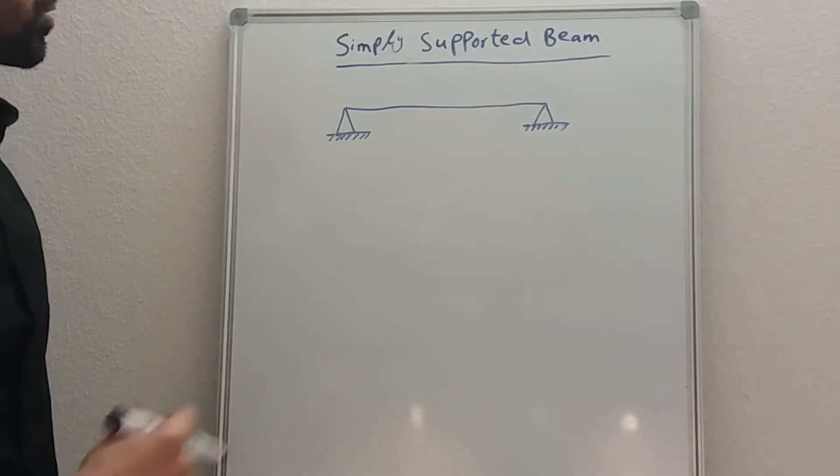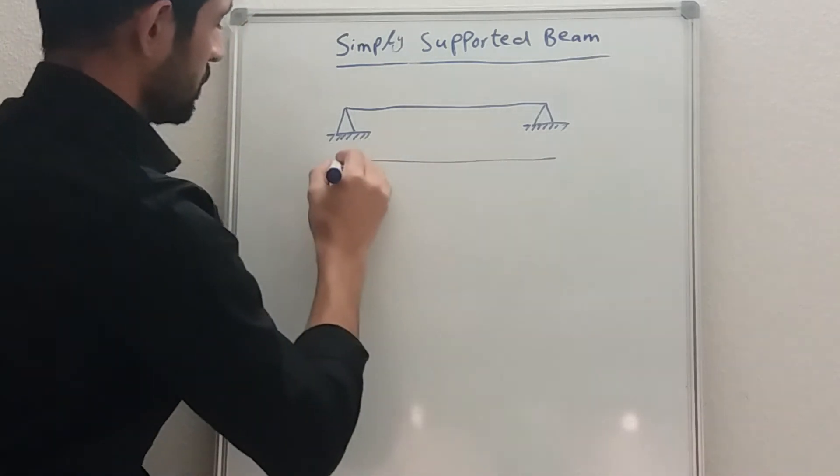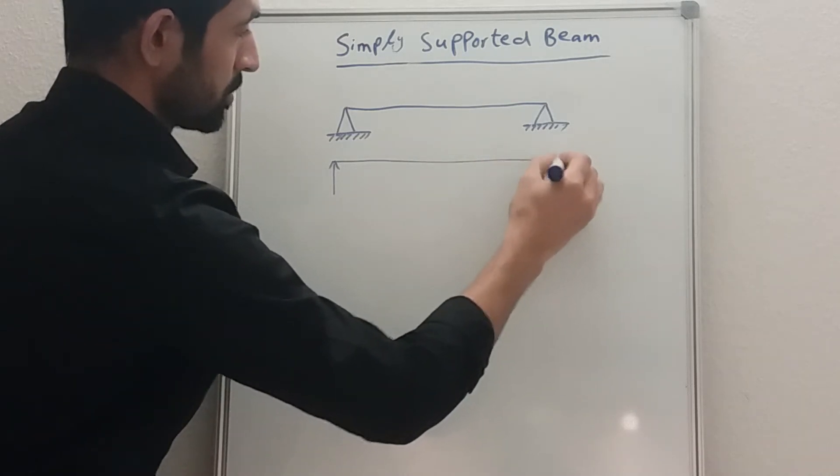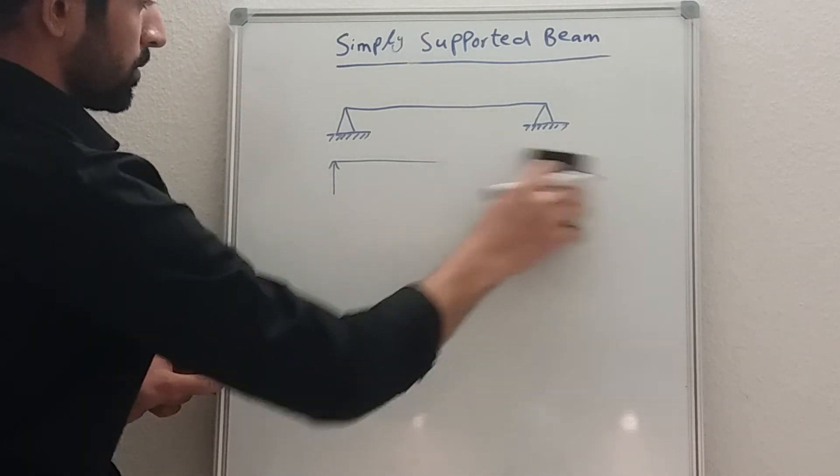The shape of the supports can be different. It could be like this, you can have just simple arrows going upwards, so it's just the same thing. Both are the same thing, so I'm going to use only the top one.